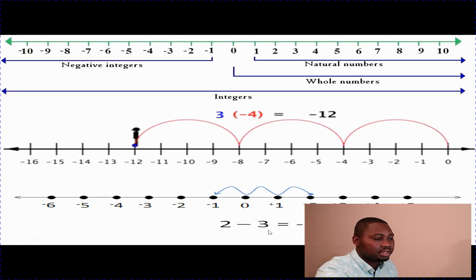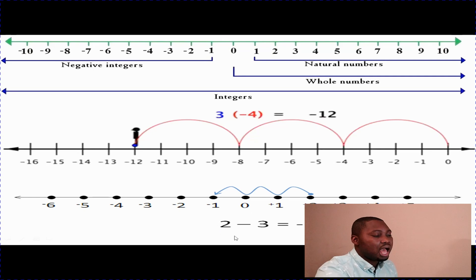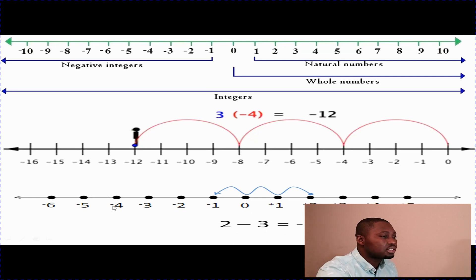If we have 2 minus 3, that is going to equal negative 1. It's like you have two dollars in your pocket and you owe me three dollars. If you pay two dollars out of the three dollars you owe me, you still owe me a dollar. So negative 4 is the opposite of positive 4.